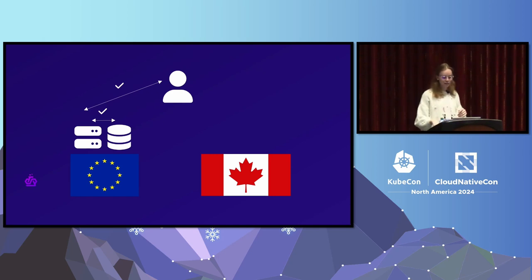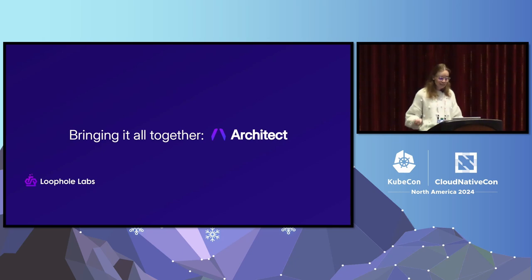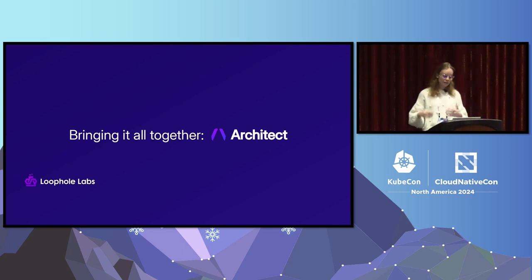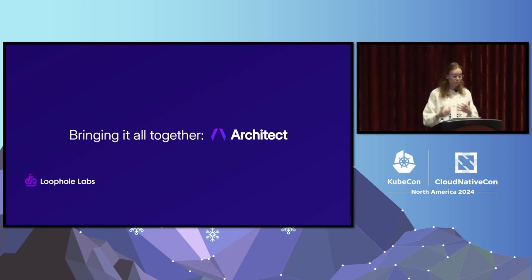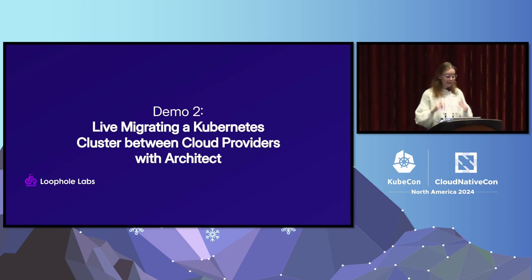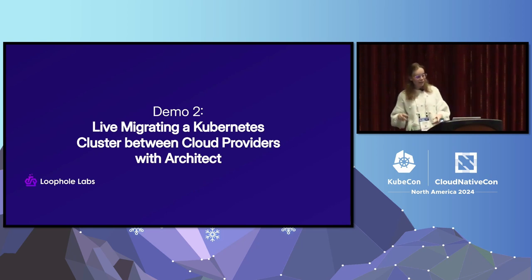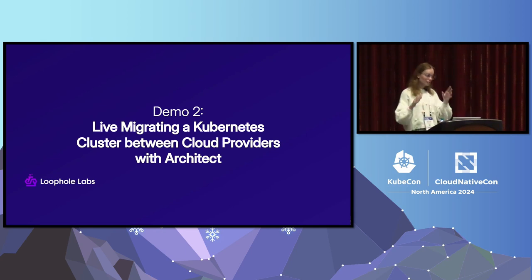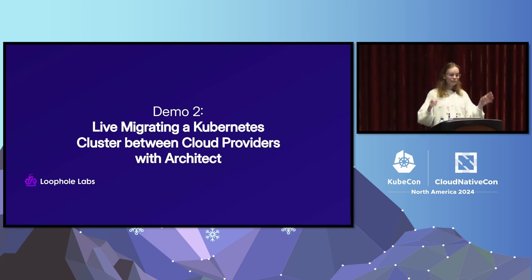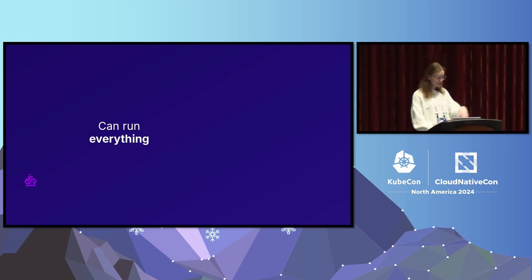The product that wraps all these individual components — Conduit, Drafter, PVM, and so on — into a nice API is Architect. Architect is what I'll use in the second demo, where we'll take a Kubernetes cluster and migrate it between cloud providers. A commoditized piece of compute should run absolutely everything, including Kubernetes, and it should run everywhere.